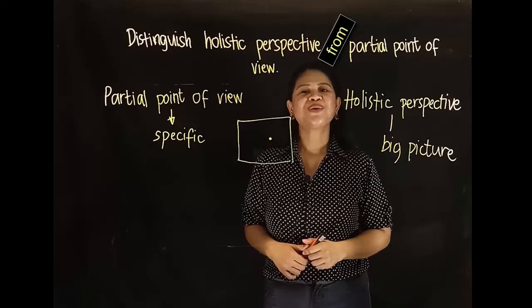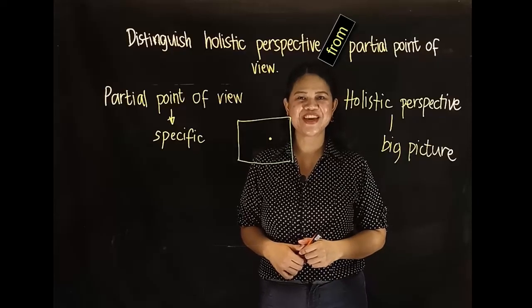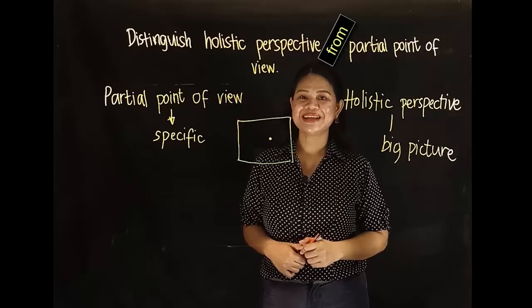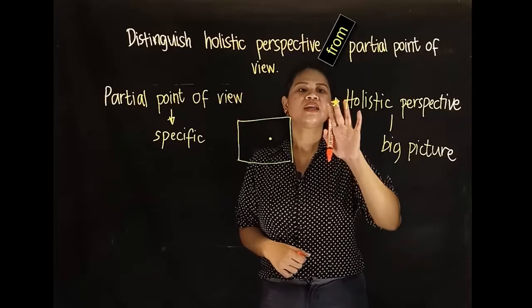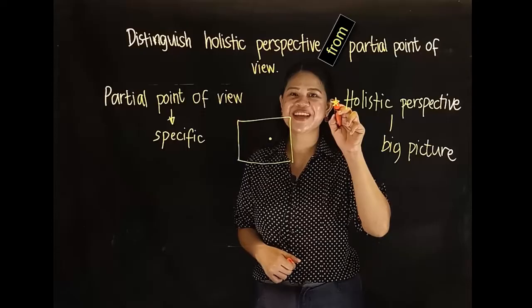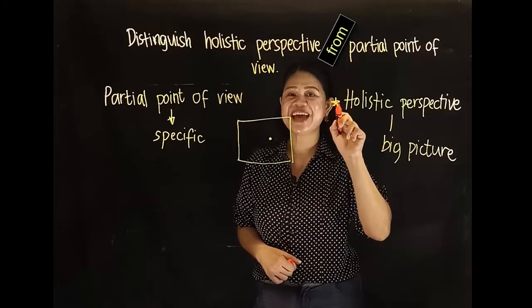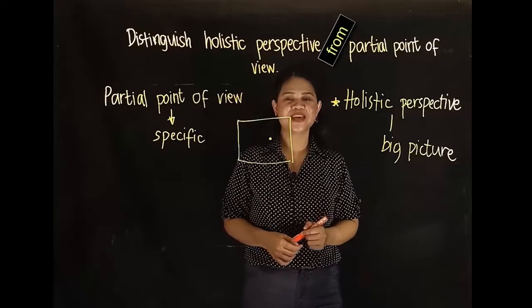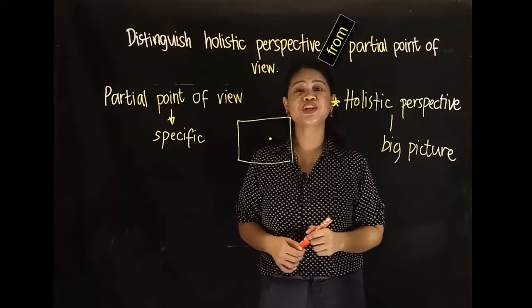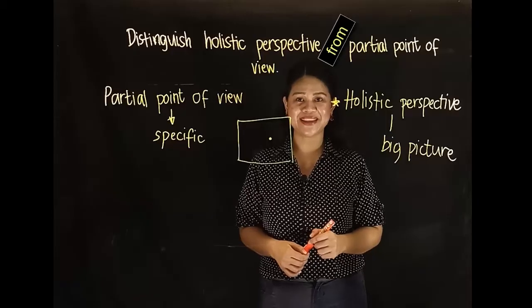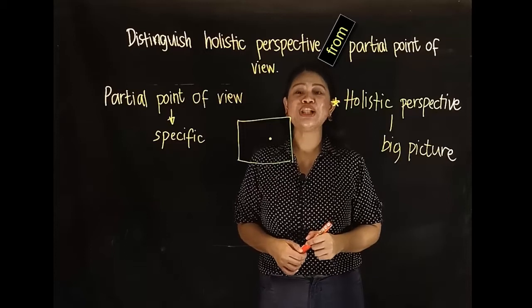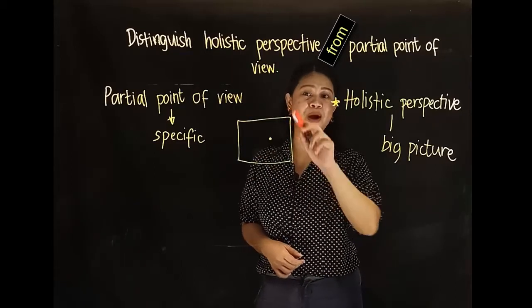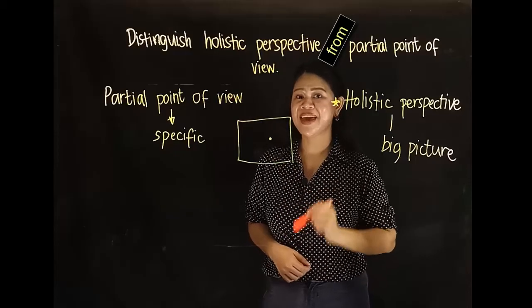Between the two, which do you think is being used in philosophy? If your answer is holistic perspective, then you are correct. In the process of doing philosophy, it is very important to understand the holistic perspective — that is, looking at all sides of the problem before making a conclusion.